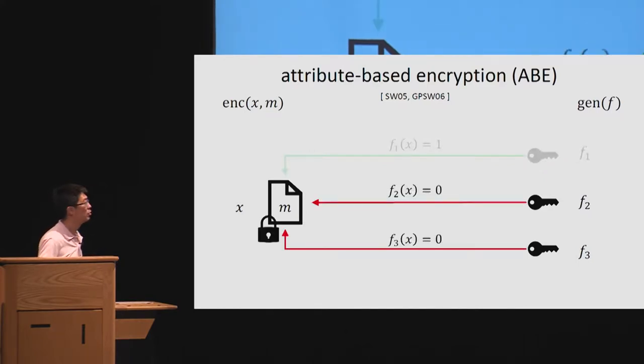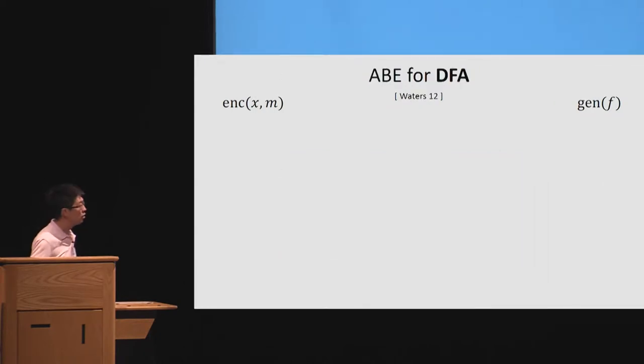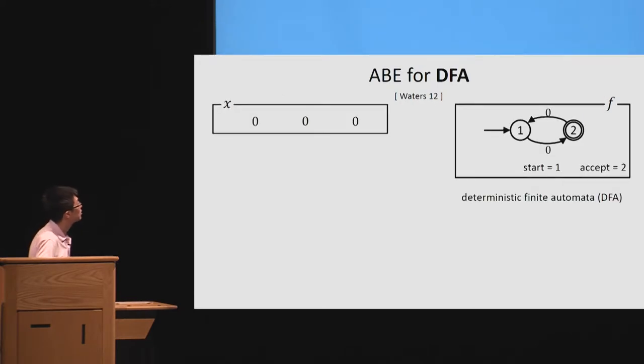Otherwise, we require that the message is hidden even when we have the secret key, and this should be held even if we have more secret keys. So in this talk, I will focus on ABE for DFA, where the policy is described by a deterministic finite automata. So let me quickly review the notion using this example about DFA.